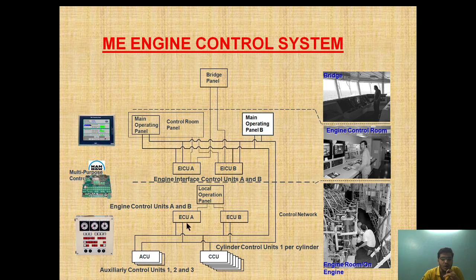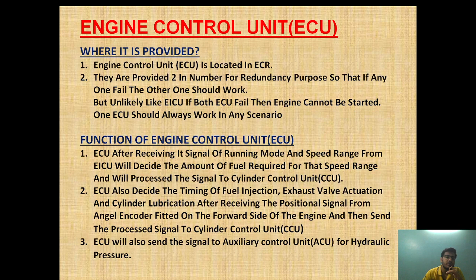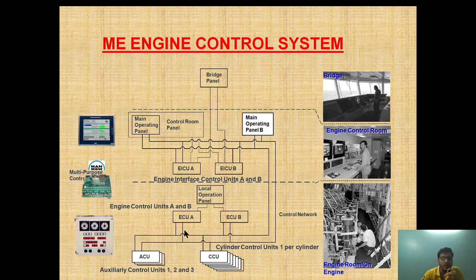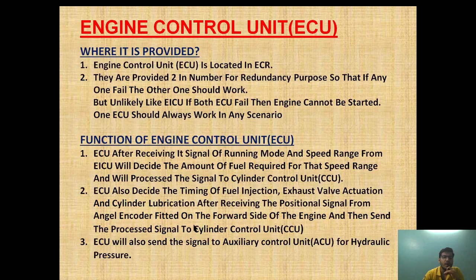After that, the ECU decides how much fuel is to be given to the individual cylinder unit for dead slow ahead, and what injection timing to set so that the required speed can be achieved and the drag direction can be controlled. The ECU processes the amount of fuel required for that speed range and sends the signal to the CCU. So for dead slow ahead, the amount of fuel required is conveyed to the individual cylinder unit by the ECU.